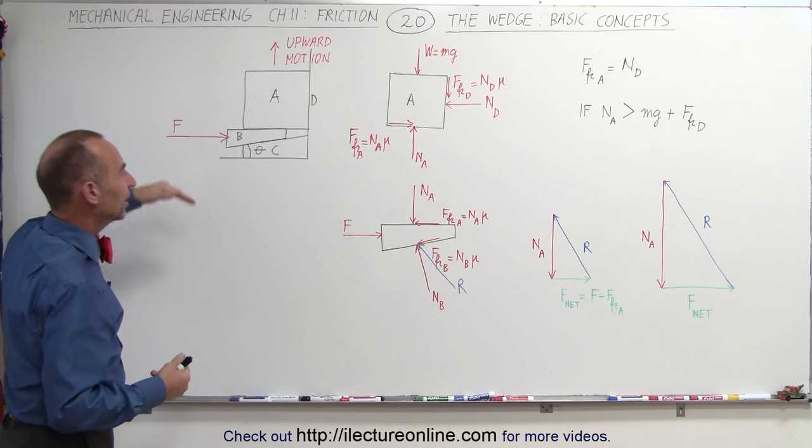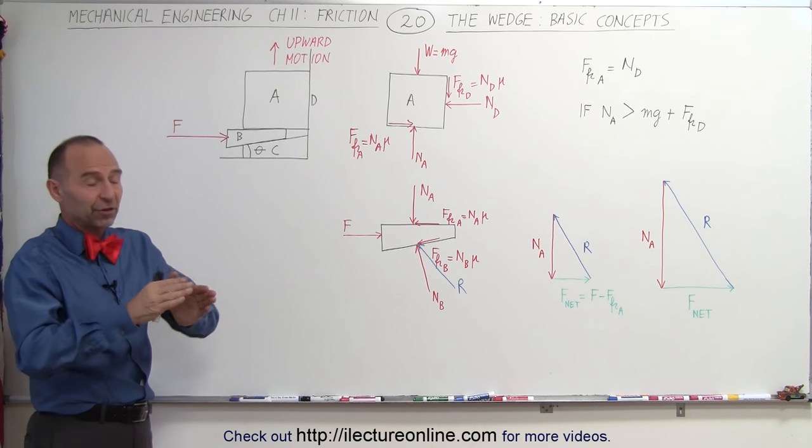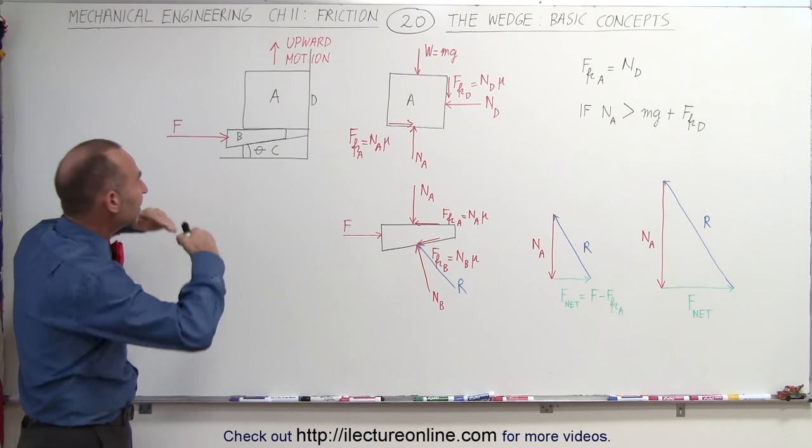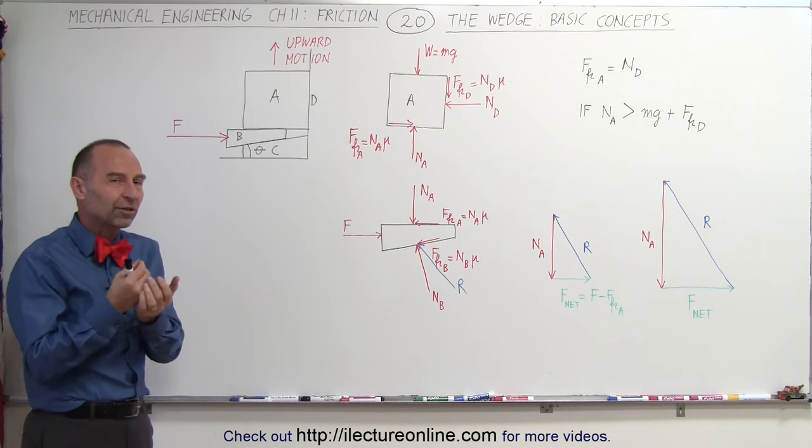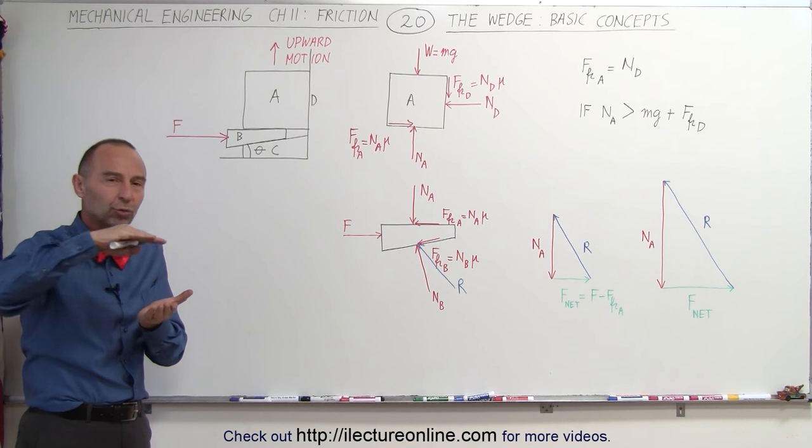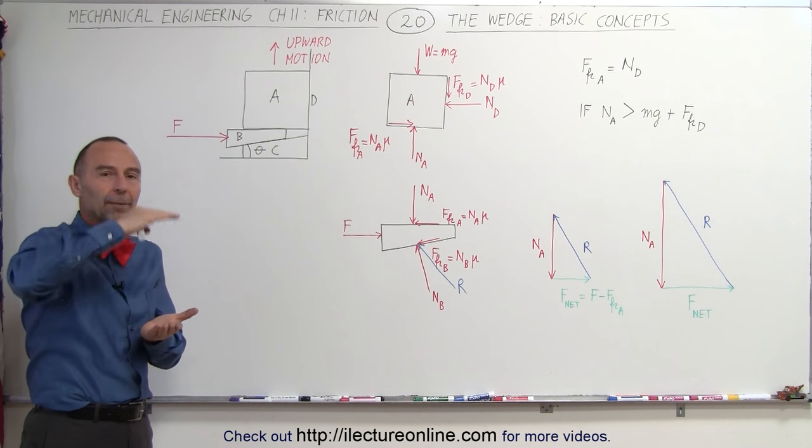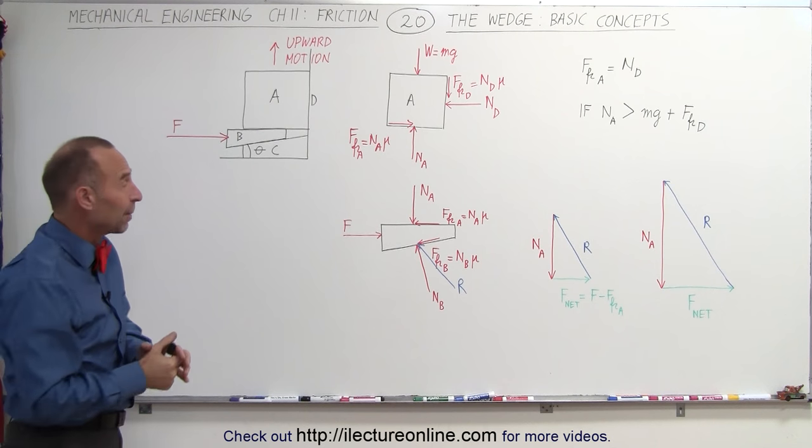A wedge is an object that is used to split something open, like you put a wedge in a log to split the log, or you could put a wedge in somewhere to lift an object like we do in this example. We also use the concept of a wedge when we talk about screws, how when you tighten or loosen a screw, you push something up or down, and the concept there is exactly the same. We'll see some examples of that as well.